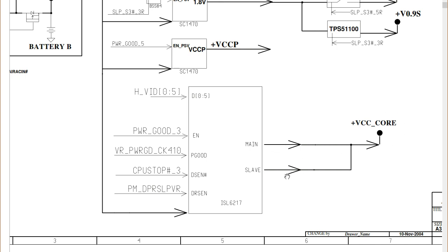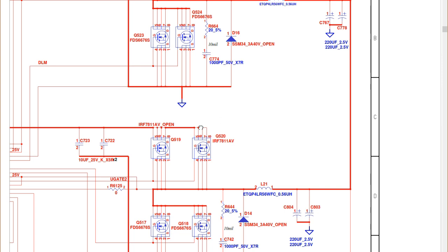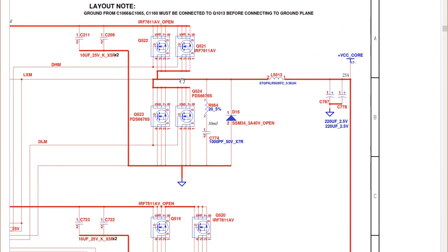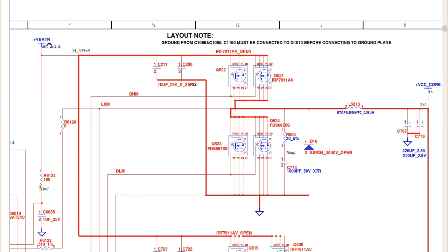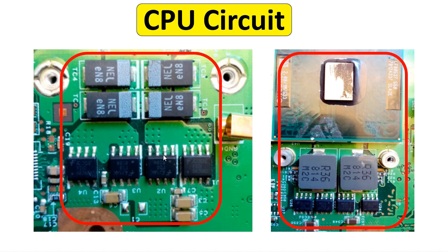This is the first (main) channel and this is the second (slave) channel. Both channels have the purpose of generating the plus VCC core for the processor. The 19 volt passes through two ceramic filtering capacitors and is applied to these two MOSFETs in the first channel.